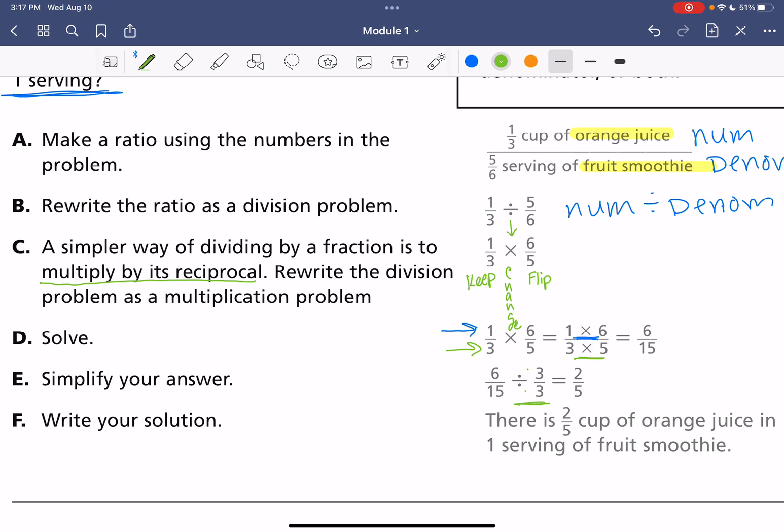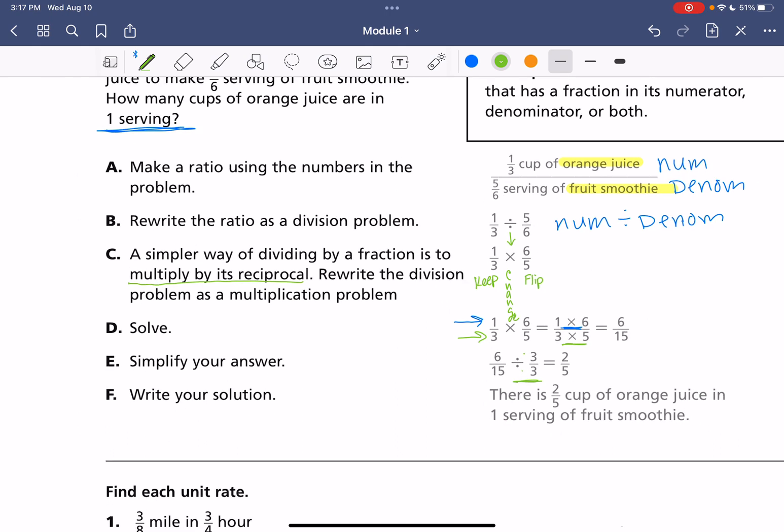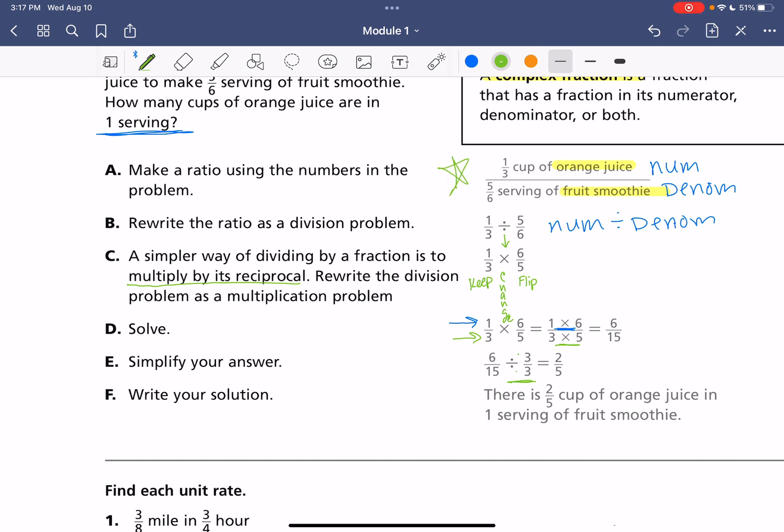Now when we're working with this, we need to put this into a sentence. We need to figure out 2 fifths what? What is 2 fifths referring to? Let me go back up to our original problem up here. 1 third cup of orange juice to 5 sixths serving of a smoothie. To put that into a sentence, we're going to have our cup of OJ per 1 serving. And here is our nice pretty sentence for that. There is 2 fifths of a cup of orange juice in 1 serving of fruit smoothie.